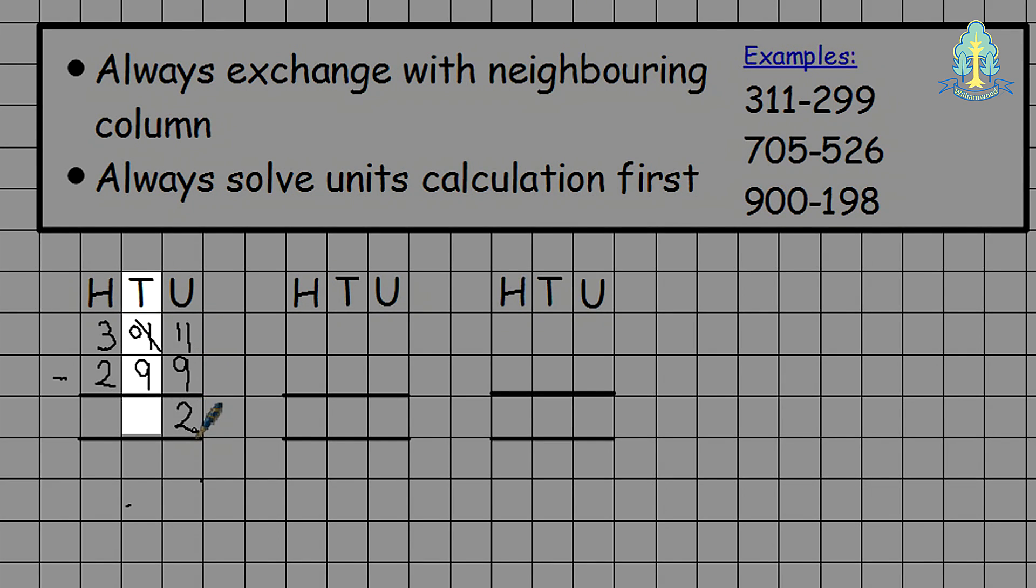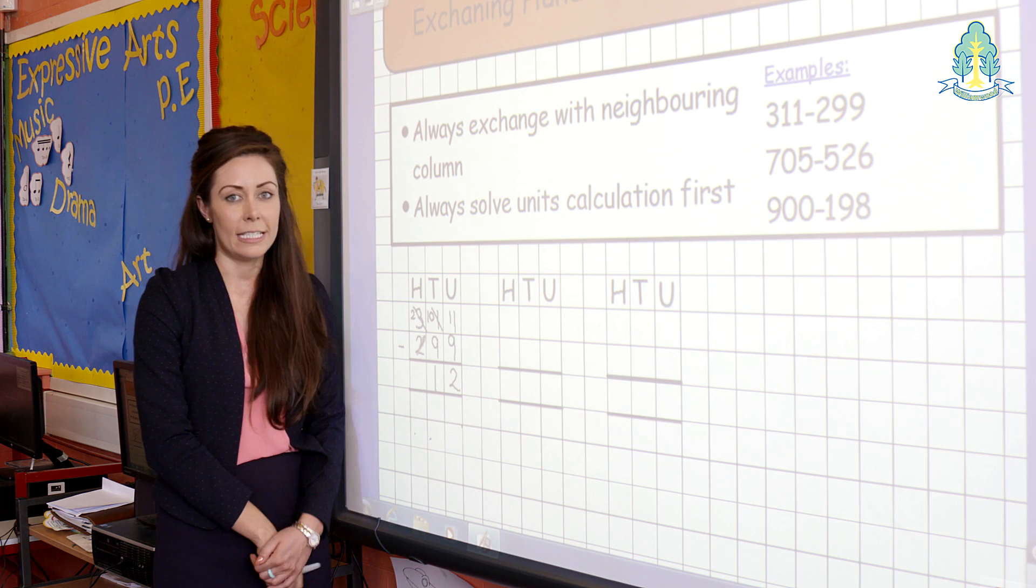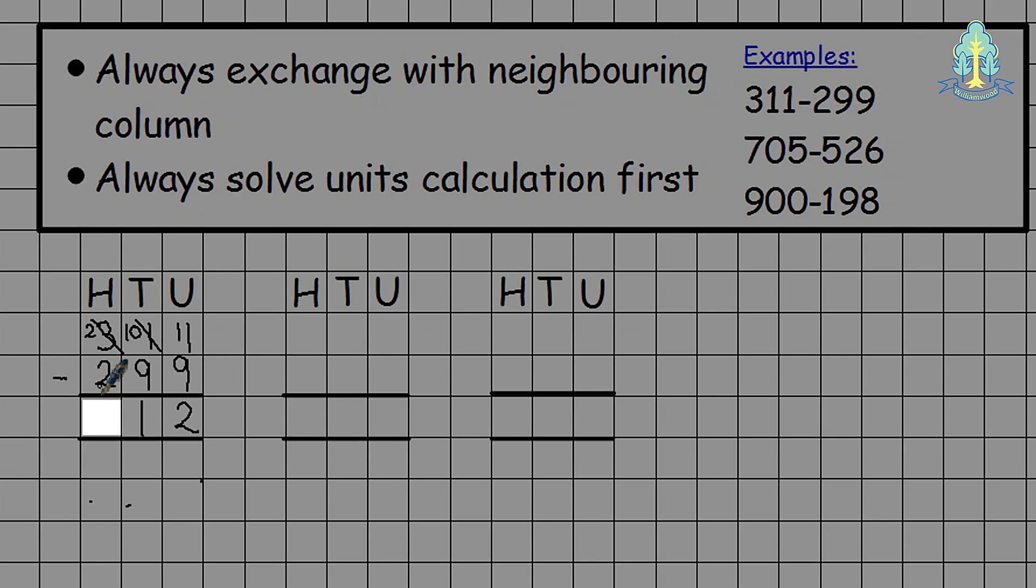Then moving on to the tens column. 0 take away 9 we can't do this so we exchange from the hundreds column. We take 100 leaving them 2 and create 10 tens in the centre column. 10 take away 9 is 1 and 2 take away 2 is 0. We don't need to represent the 0 at the front of the number as it doesn't have a value.